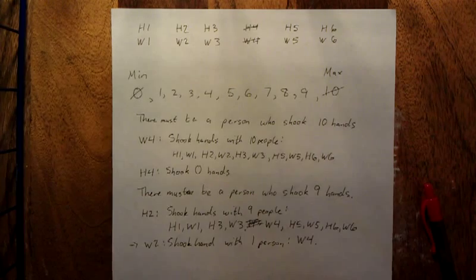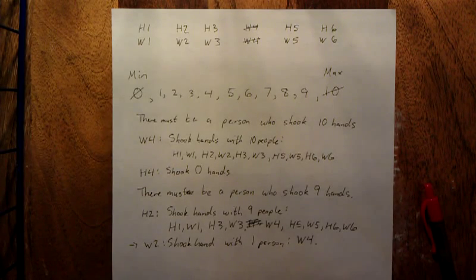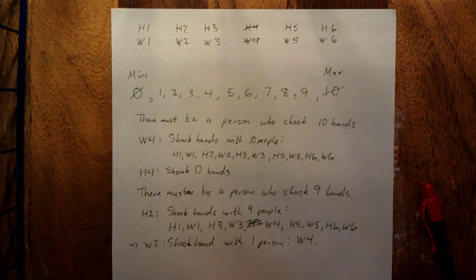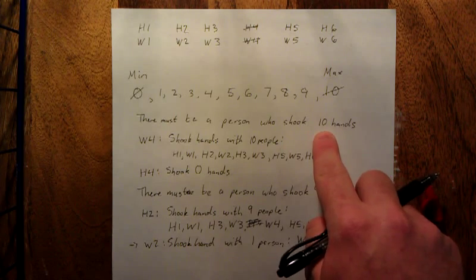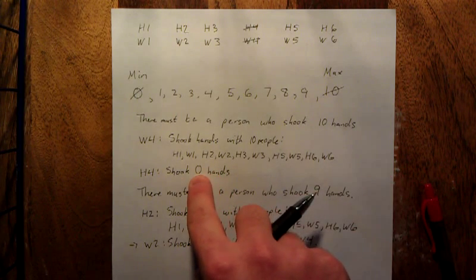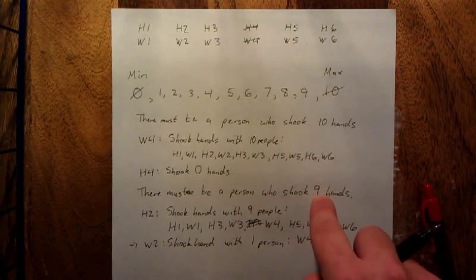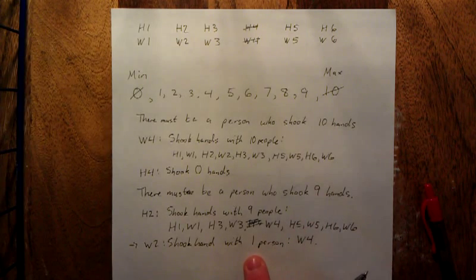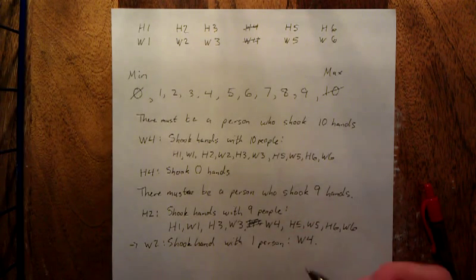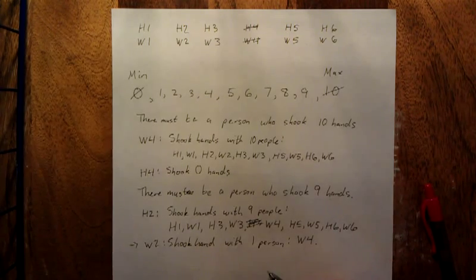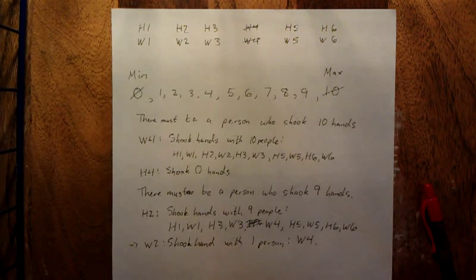The pattern that we're going to see start to emerge from here is that any husband-wife combo, if one of them shook ten hands, the other one shook zero hands. If one of them shook nine hands, the other one shook one hand. Now what you're going to see is that whoever shakes hands with eight people, their spouse is going to shake hands with two people.